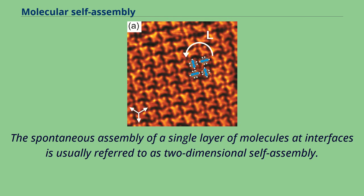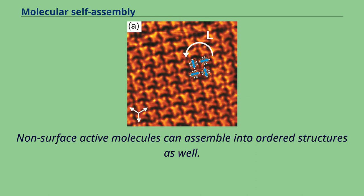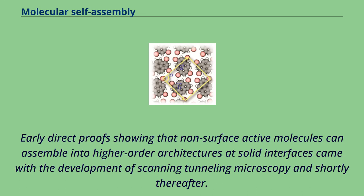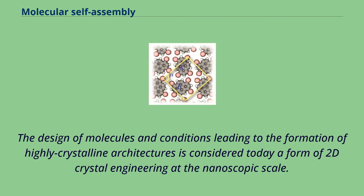These DNA structures have also been used as templates in the assembly of other molecules such as gold nanoparticles and streptavidin proteins. The spontaneous assembly of a single layer of molecules at interfaces is usually referred to as two-dimensional self-assembly. One common example is Langmuir-Blodgett monolayers and multilayers of surfactants. Non-surface active molecules can assemble into ordered structures as well, with early direct proof coming from the development of scanning tunneling microscopy. Two strategies became popular for 2D architectures: self-assembly following ultra-high vacuum deposition and annealing, and self-assembly at the solid-liquid interface. The design of molecules and conditions leading to highly crystalline architectures is considered a form of 2D crystal engineering at the nanoscopic scale.